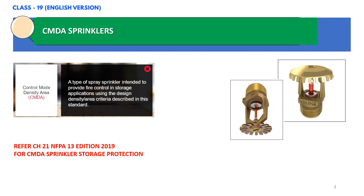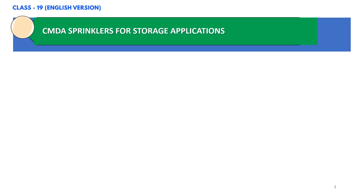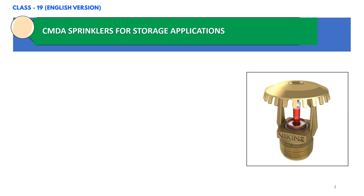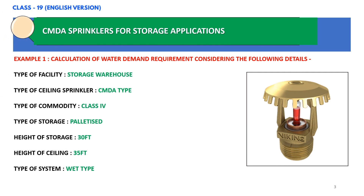You can refer to chapter 21 in NFPA 13 2019 edition for more details. Now let us see an example to calculate the water demand. CMDA sprinklers are used to control fires in storage applications. In this example, the type of facility is a storage warehouse, the type of ceiling sprinkler is CMDA type, commodity classification is Class 4, storage type is palletized storage, height of storage is 30 feet, and height of the ceiling is 35 feet. The type of system is wet type.